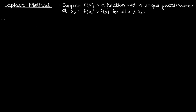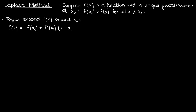Let's examine the behavior of f of x around the global maximum x0. To do this we'll perform a Taylor expansion of f of x around x0, continuing the expansion until the quadratic term. Now since x0 is a global maximum, the first derivative of f of x at x0 is 0, and the second derivative is negative because the function must be concave down at a maximum. So we'll cancel the first derivative and put a negative sign and absolute value in front of the second derivative.